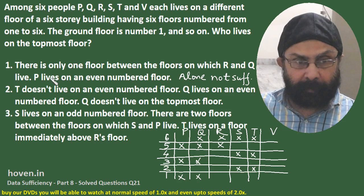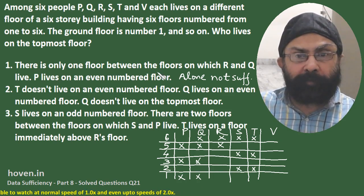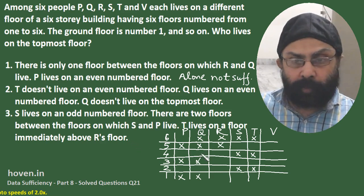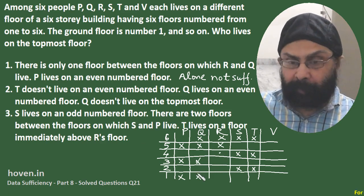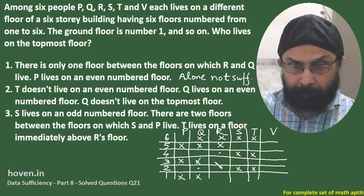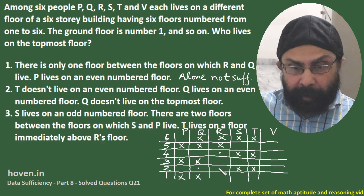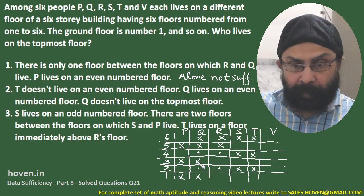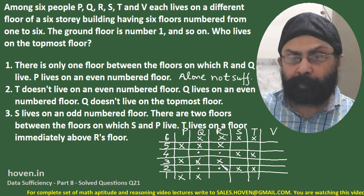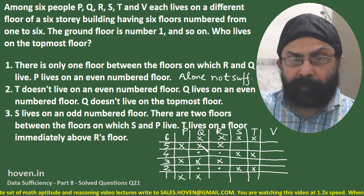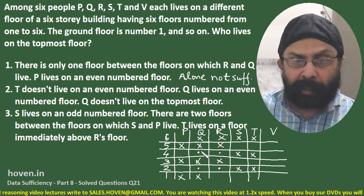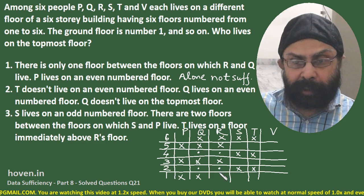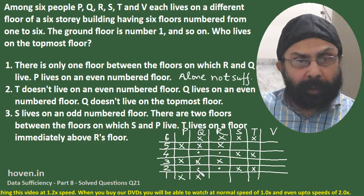In the second pass we use the remaining statements. There is only one floor between the floors on which R and Q live — a gap of 1. If R is on a certain floor, Q will be two floors away. We can mark the possible combinations: if Q is on floor 4, R is on floor 2, and vice versa. We can rule out some positions because if R were on certain floors, Q would have to fall on already-eliminated floors. We mark dots to remind us of these Q-R pairings. One important observation: the fourth floor is occupied by either Q or R in both cases.